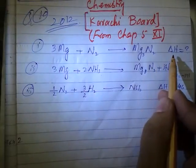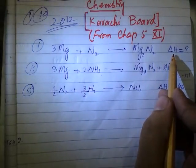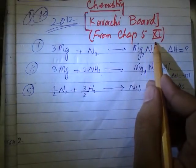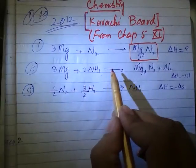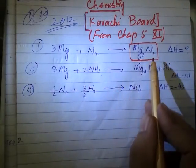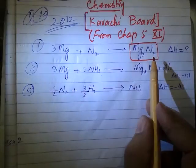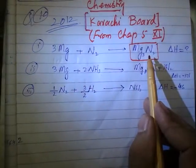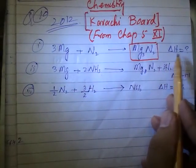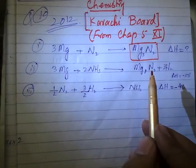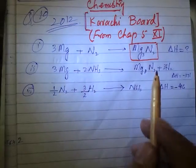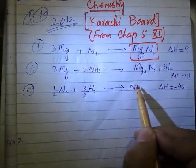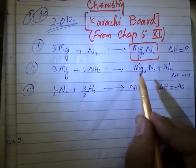We have to calculate ΔH for Mg₃N₂ — this is our required figure. It means we have to calculate the heat of formation of magnesium nitride, so ΔH is the question mark. To calculate ΔH we have to use the other equations, not the required one.